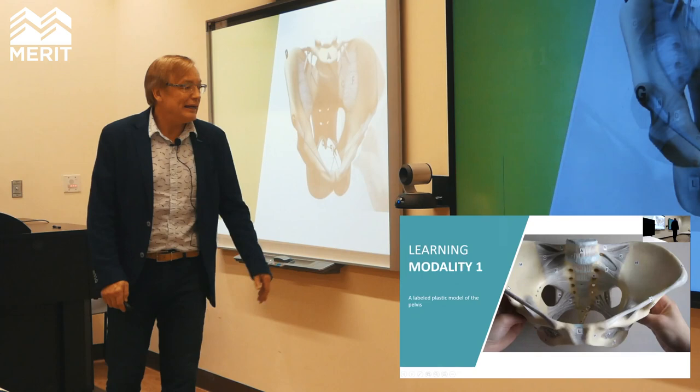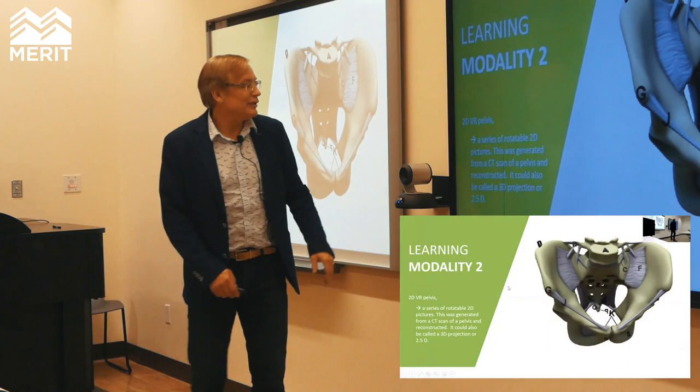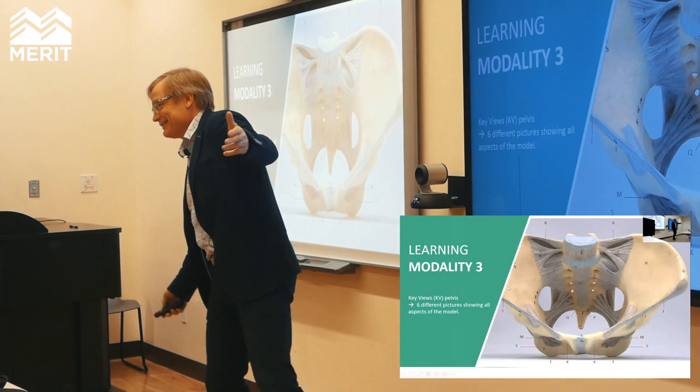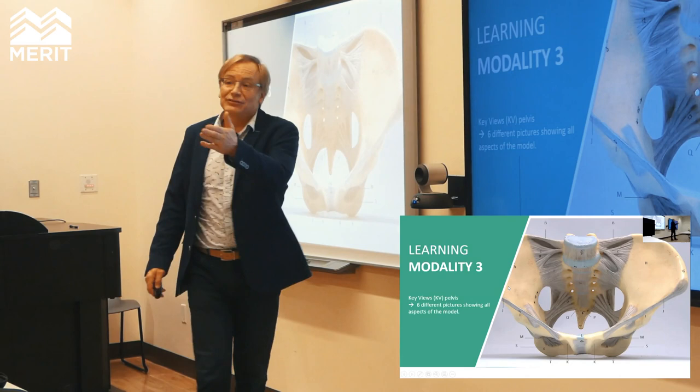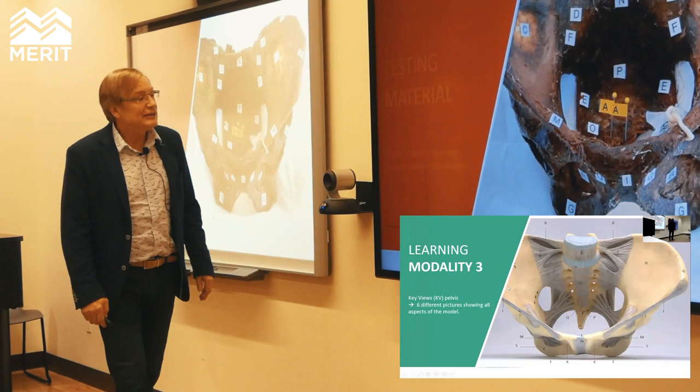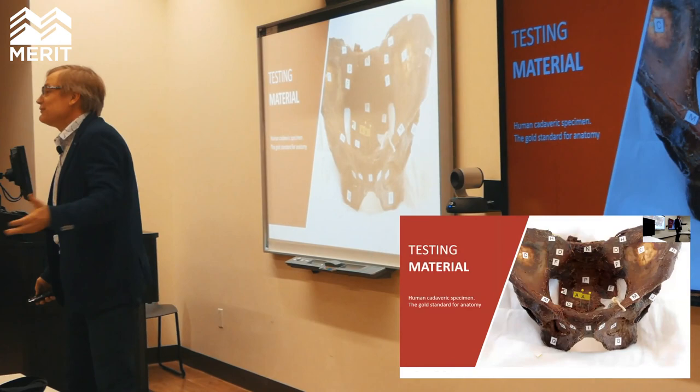This is the labeled plastic model of the pelvis. This is our VR model — exactly the same, except in two dimensions: a 2D rotatable user-interactive structure. And then key views — just front, back, and sides of an actual pelvis. We tested them on a cadaver pelvis because I don't actually care if you know plastic anatomy; I care if you know it on a pelvis. The 2D virtual reality model cost about $2,000 — extremely accurate, you can rotate it all ways.